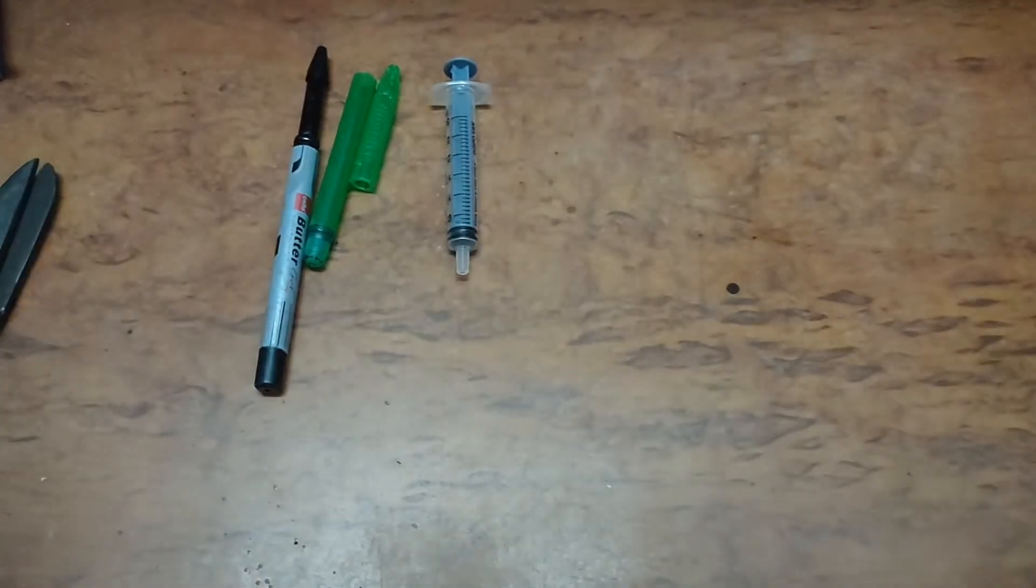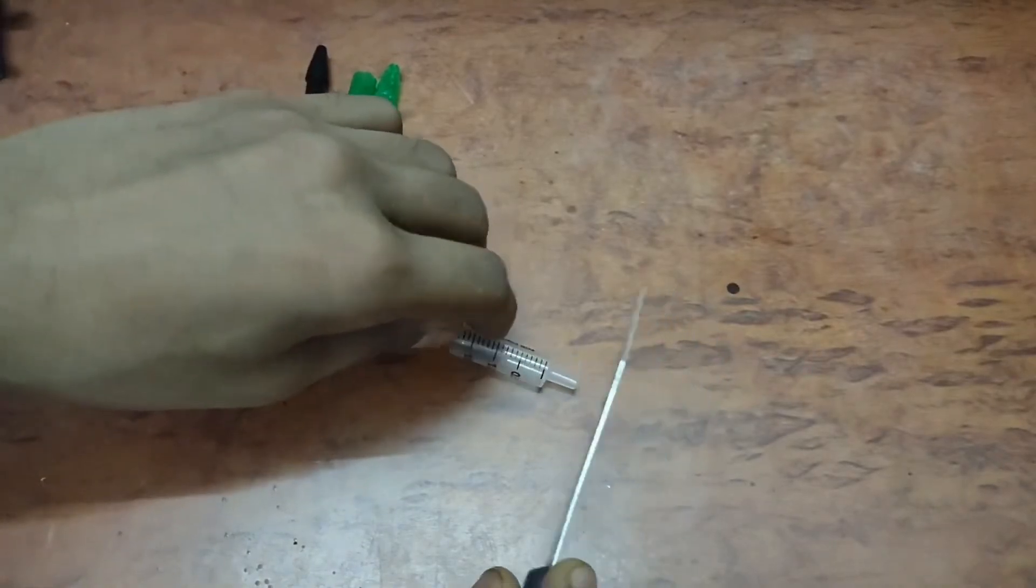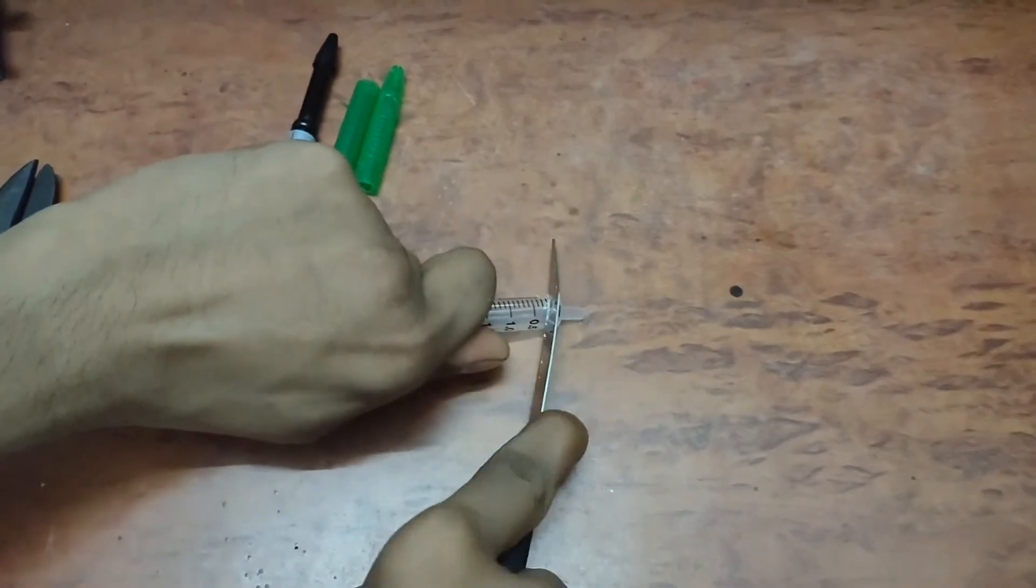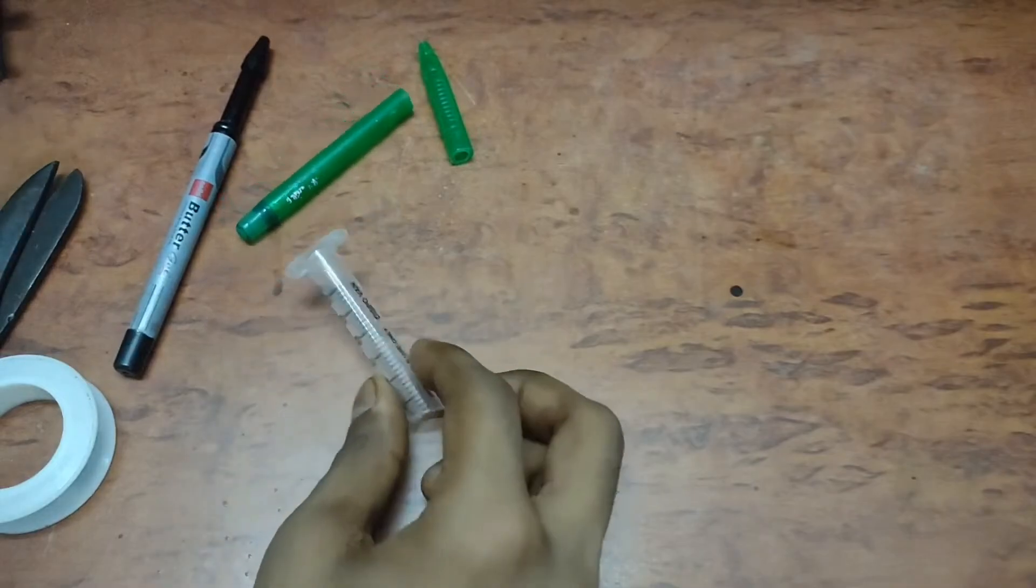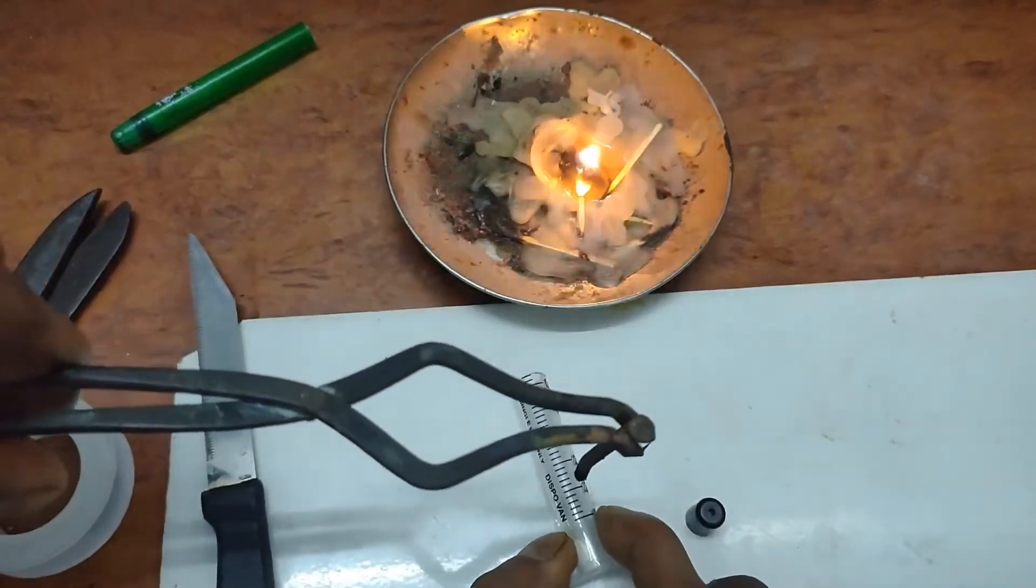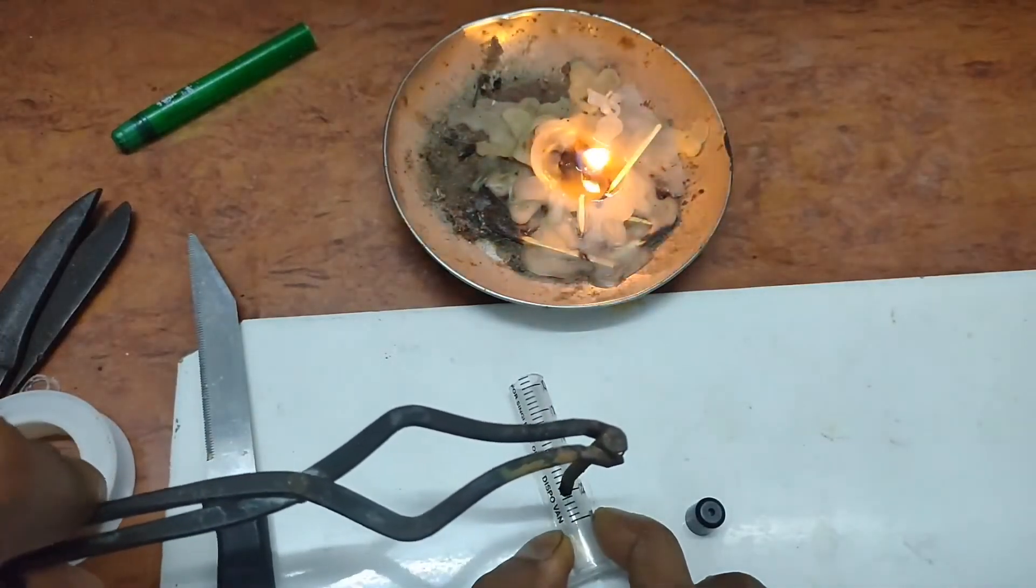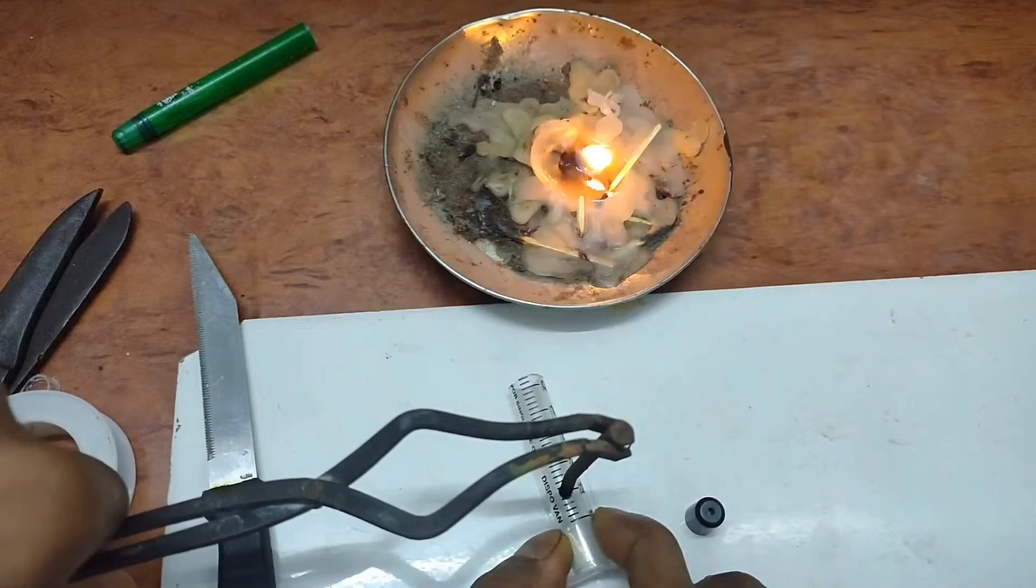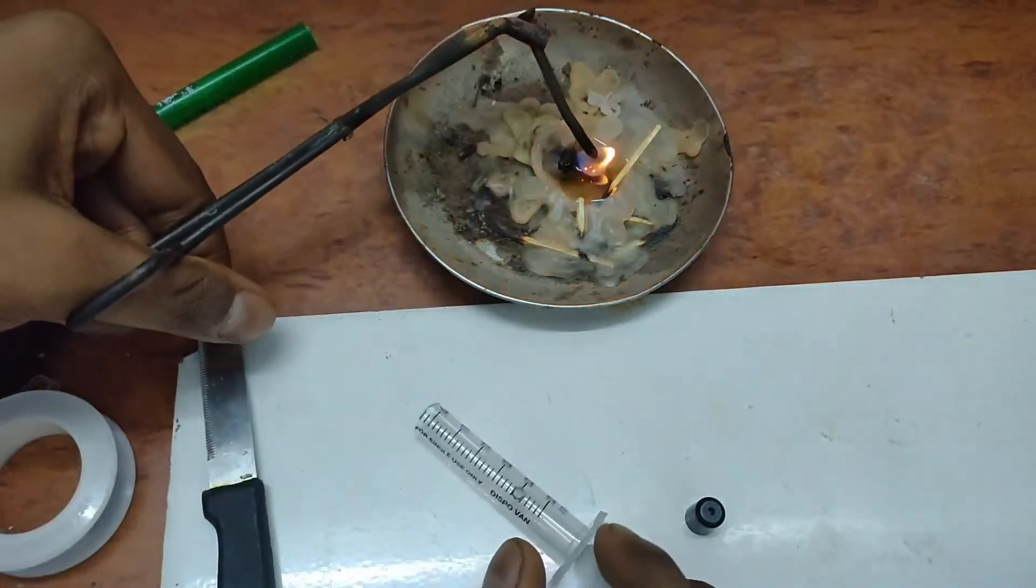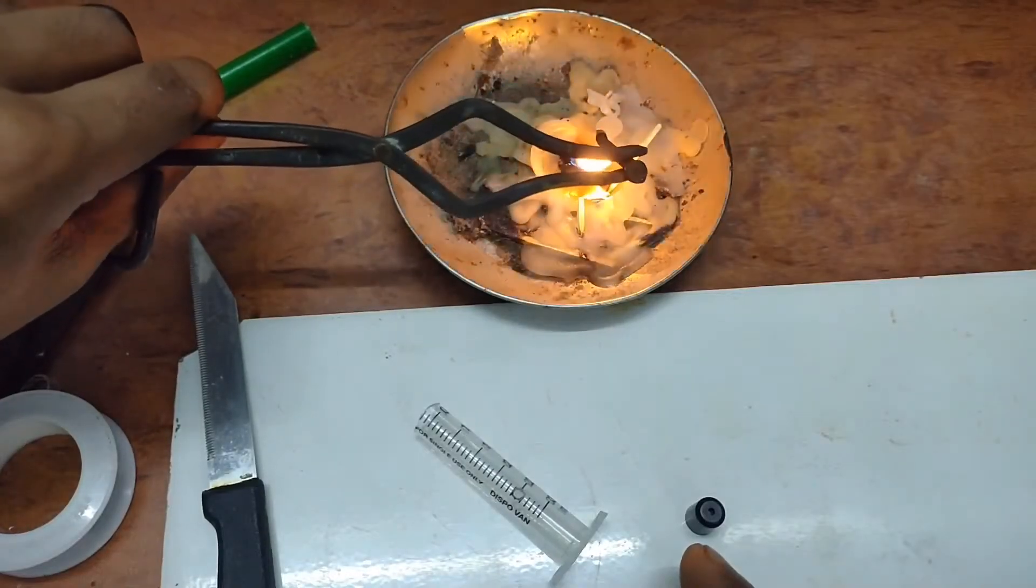First I will take the syringe, take out the plunger and cut the front with a knife. Now I will be making a hole inside the syringe at the 2.5ml mark with this hot iron nail, and also I will be making a hole in this cap with the hot iron nail.